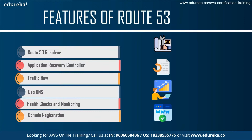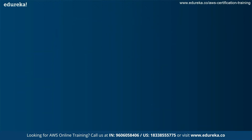Next is Geo DNS, which routes end users to a particular endpoint that you specify based on the user's geographical location. There are also regular health checks and monitoring — Amazon Route 53 can monitor the health and performance of your application, servers, and resources. Finally, there is domain registration, where Route 53 offers domain name registration services so you can search for and register available domain names, some of which may cost money.